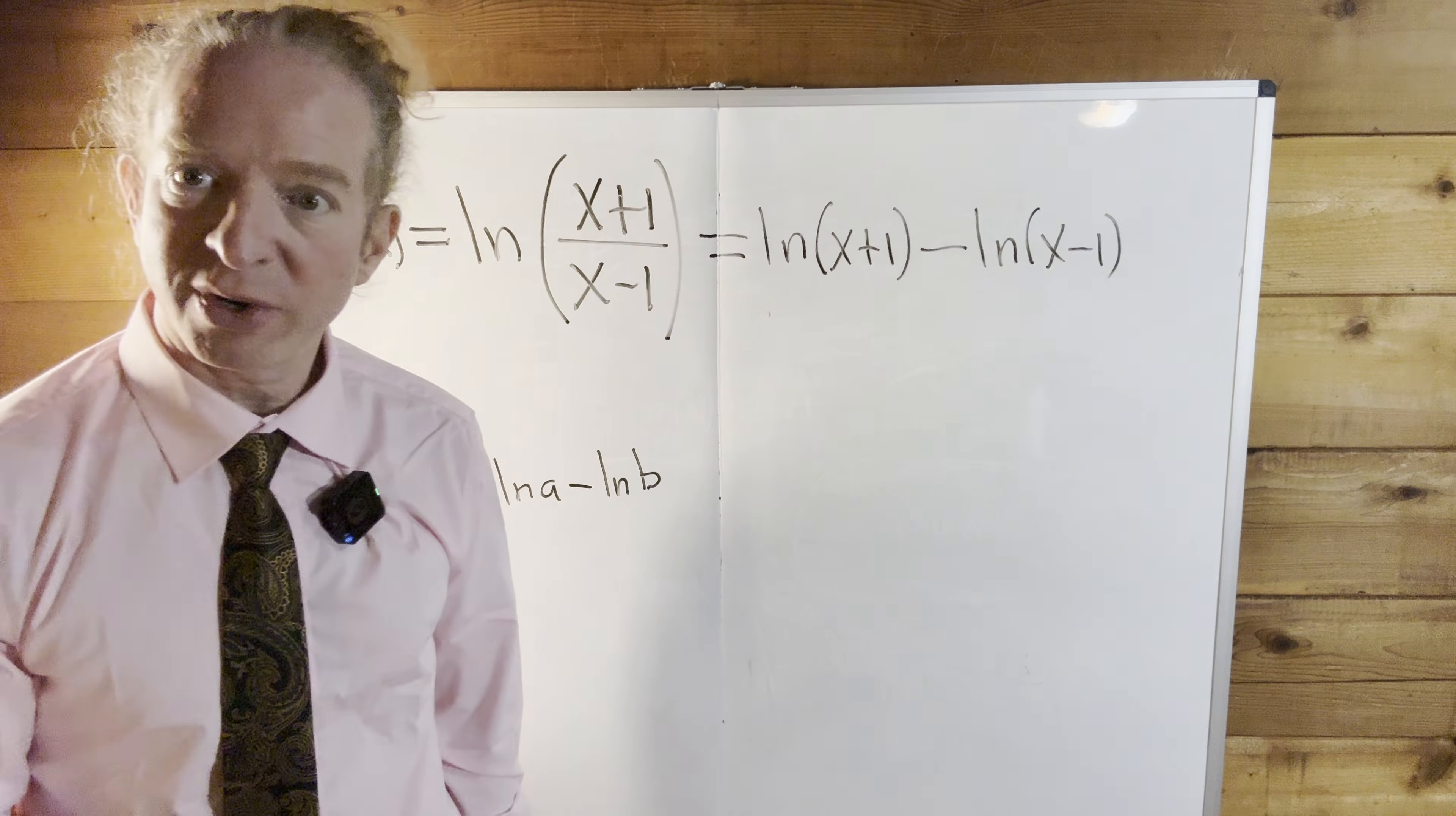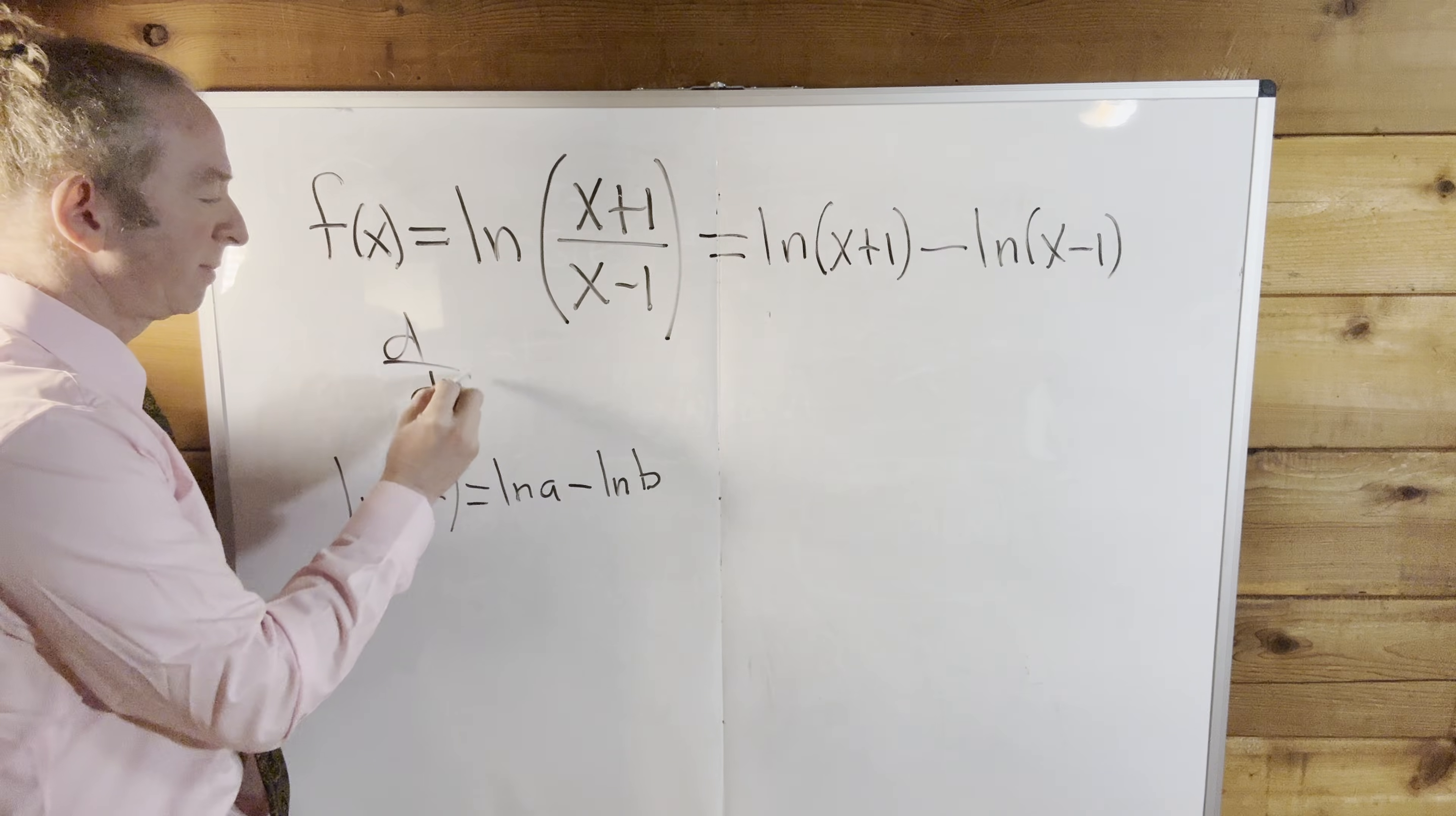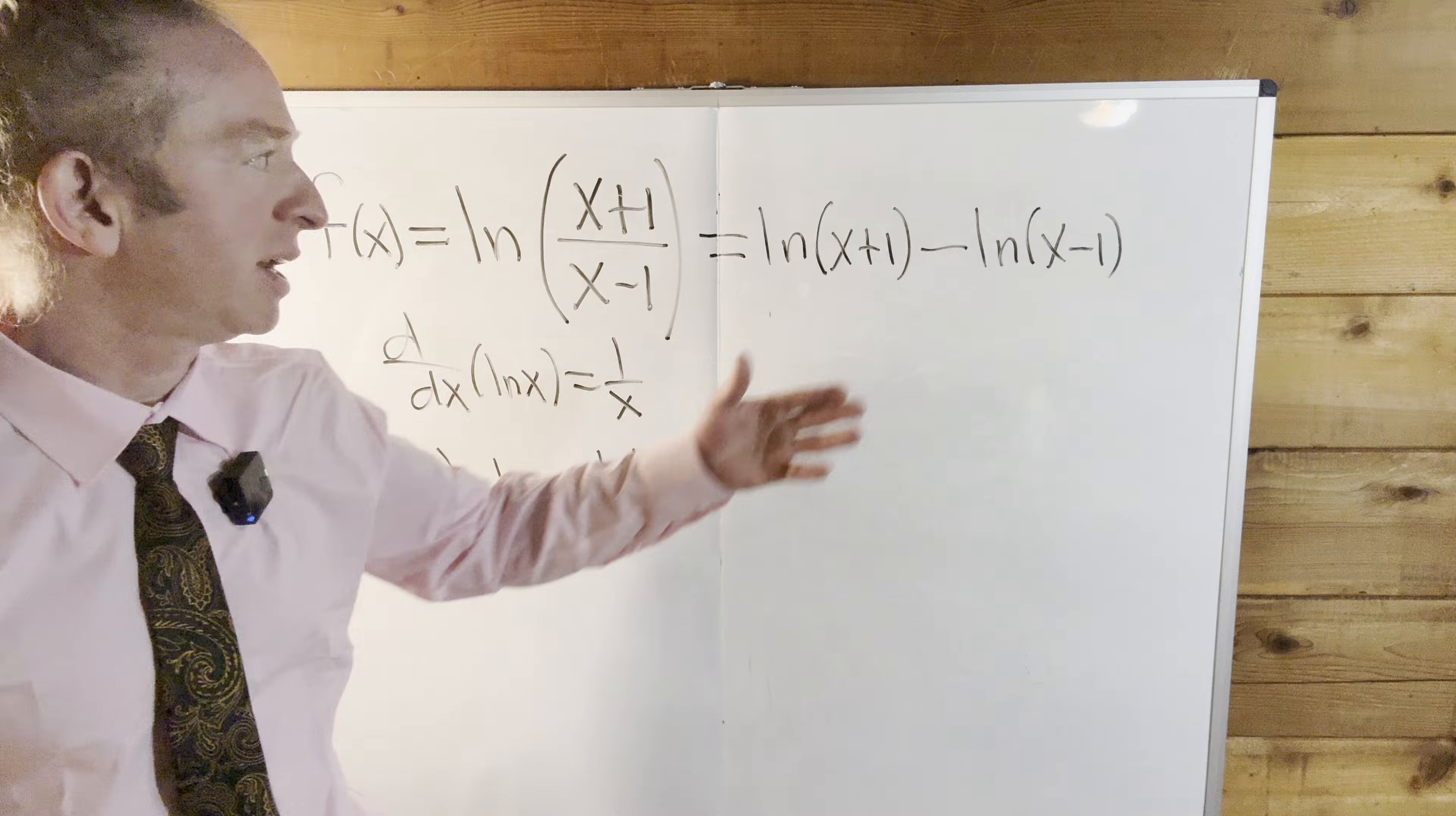And now we can take the derivative. So the derivative of the natural log of x is 1 over x. That's a formula that we'll need in this problem. In this particular case though, we don't have x. We have x plus 1 and x minus 1.